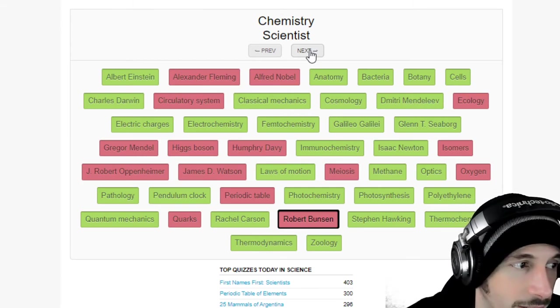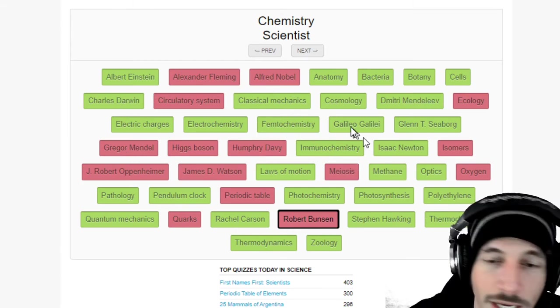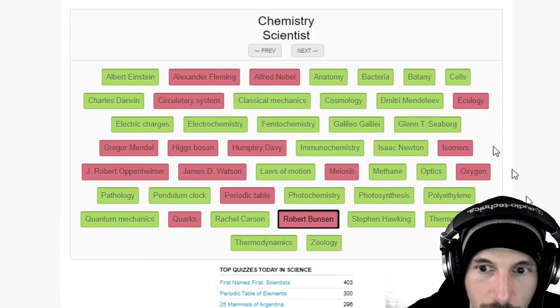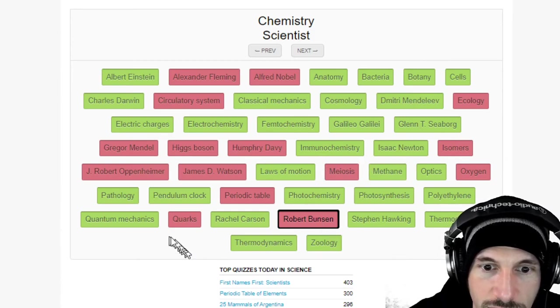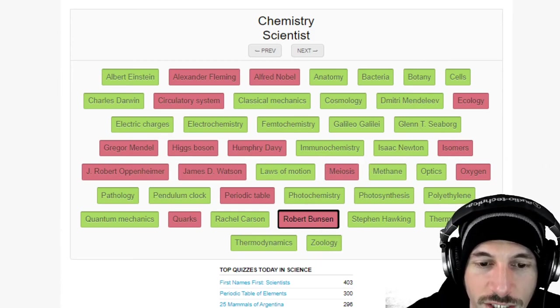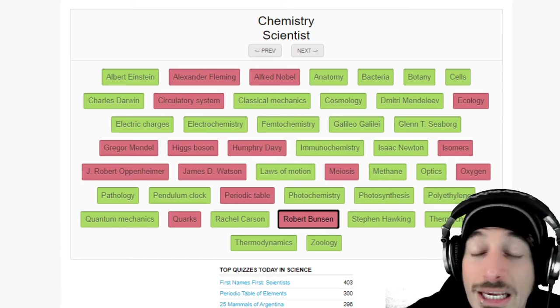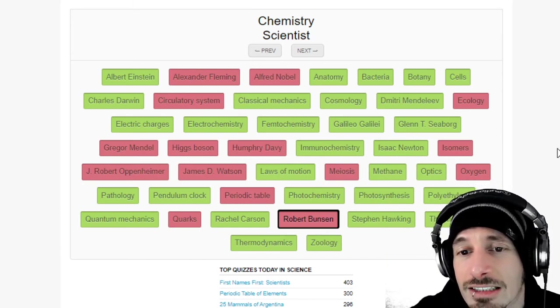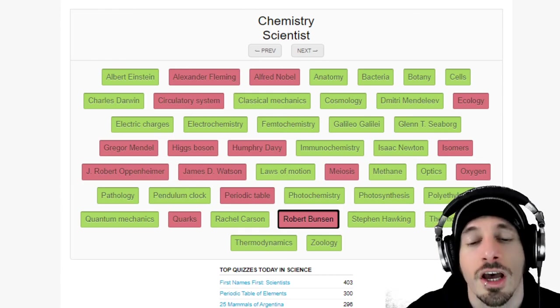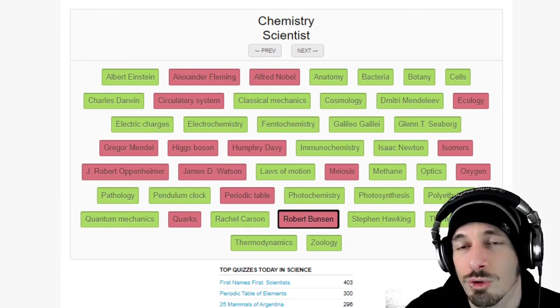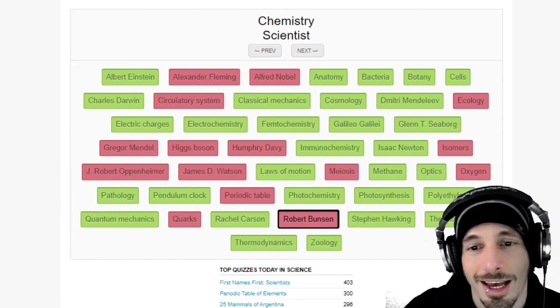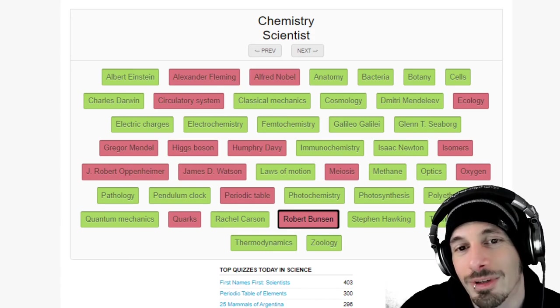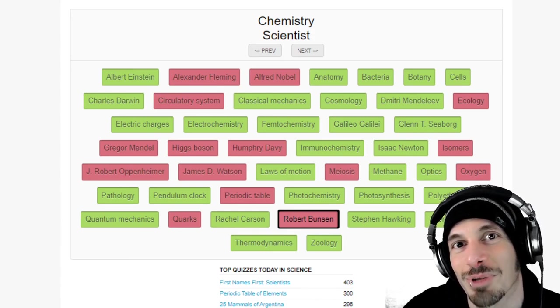Chemistry scientist Robert, I didn't know. It's the people, really I feel like I would have got the other ones like circulatory system, ecology, isomers, meiosis, quarks, I would have got those eventually. But the people, no effing clue, no clue. If you're a scientist, congratulations, I respect your breakthroughs in all of the science. But if you ask me which one, if you tell me what you did and then you ask me five seconds later I'll be like you're a scientist bro. That's my answer, you're a scientist bro.